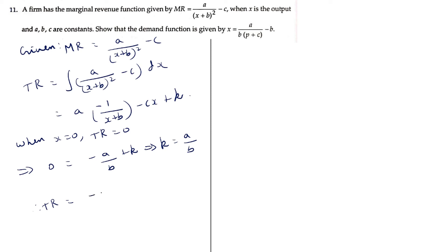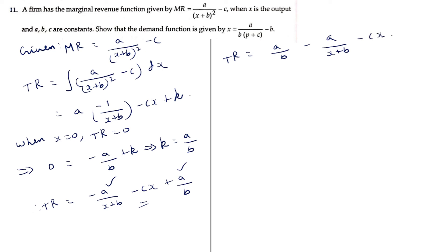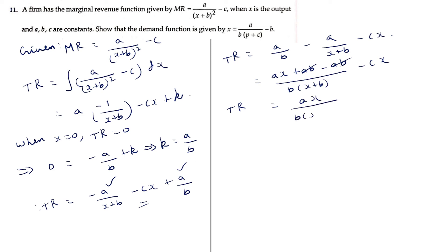Therefore TR = -a/(x+b) - cx + a/b. Simplifying a/b - a/(x+b) with LCM b(x+b): (ax+ab-ab)/(b(x+b)) = ax/(b(x+b)). So TR = ax/(b(x+b)) - cx. The demand function p = TR/x = a/(b(x+b)) - c... simplified: p = a/(bx+b²) - c.